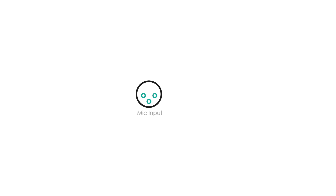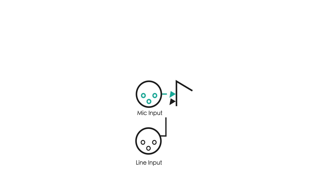The signal first enters the console through an input, which is usually a balanced signal that enters at mic level. Sometimes the signal may enter at line level, which is 50 dB higher than mic level. The input passes the signal to the preamp, which is controlled by the gain. The preamp and gain raise the signal to the correct amplitude to pass through the console.